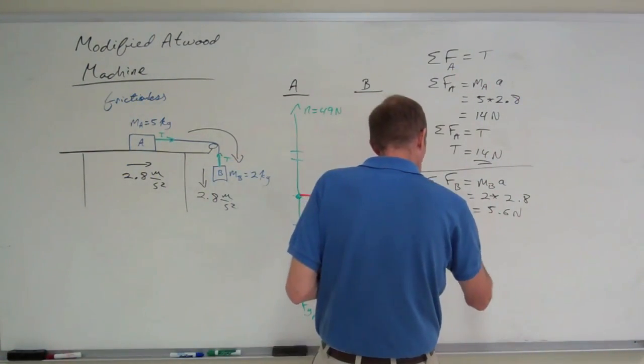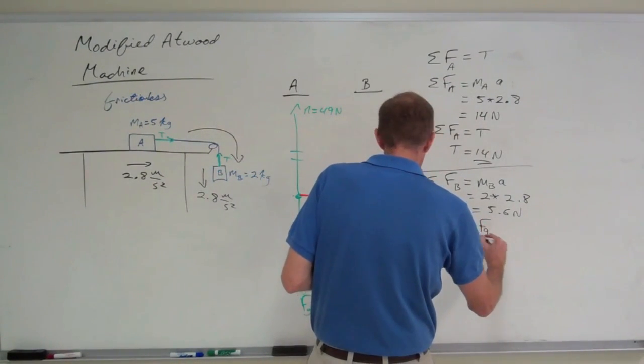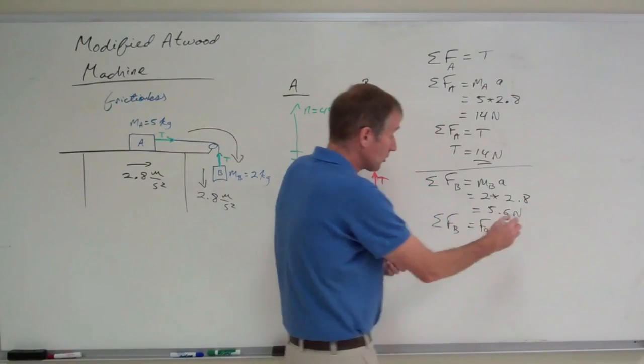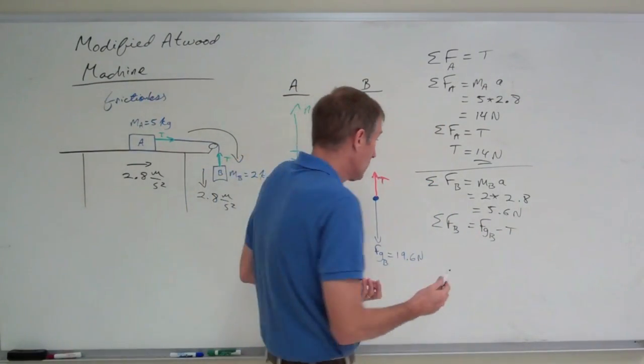So, the net force acting on block B is the weight of B less the tension. Again, if you get those backwards, you're going to get the wrong answer. Not only the wrong sign, but the wrong answer, the wrong number.